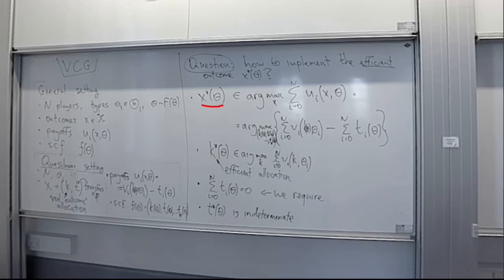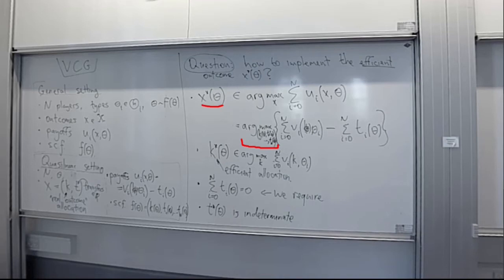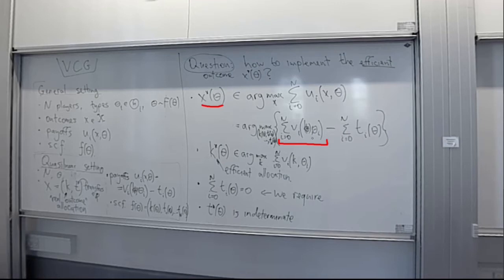If we plug in our utility functions and the structure on the set of outcomes, we can reframe this problem as finding an argmax over the allocation rule k of theta and transfers t_1 of theta through t_n of theta. We are taking the argmax of the sum of the real utilities v_i of k of theta and theta_i, minus the sum of transfers to all players.